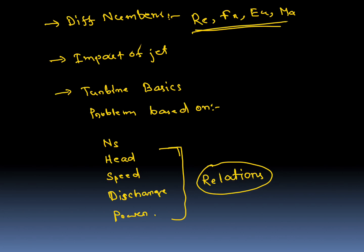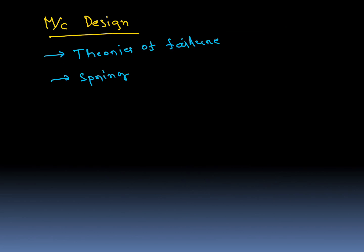In Machine Design, theories of failure are very very important. Spring formula: K = Gd⁴ / (64RN) — this is very very important.